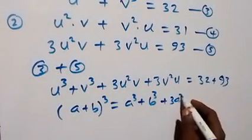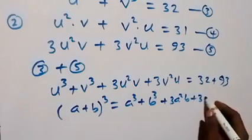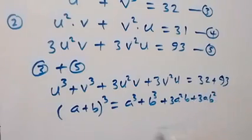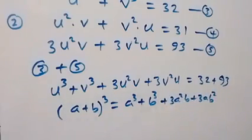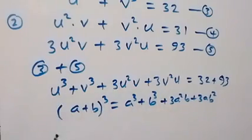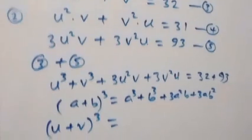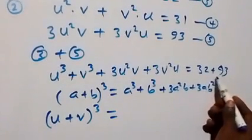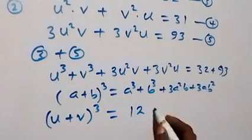Comparing the left-hand side with the binomial expansion a cubed plus 3a squared b plus 3ab squared plus b cubed, we recognize that the left-hand side is simply u plus v, all raised to the power 3. The right-hand side is 32 plus 93, which equals 125.